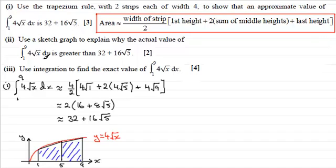In the second part it said use a sketch then to explain why the actual value of this integral is greater than 32 plus 16√5. Well we've drawn our sketch here.